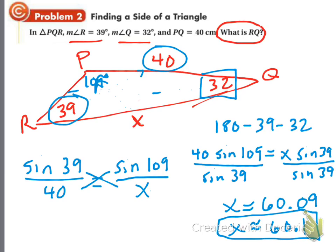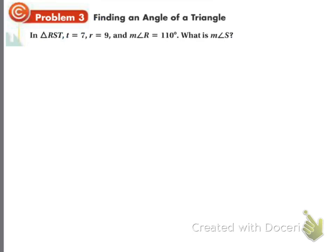Okay, draw a picture. Now that was finding the length of a side. This problem talks about finding an angle. It says in triangle RST, t equals 7, r equals 9, and angle R equals 110 degrees. What's the measure of angle S?